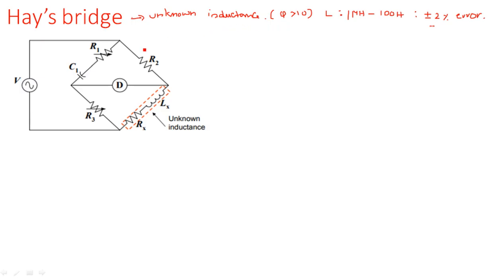It is always good to compare with previous known bridges to understand the difference. In the first arm, Hay's Bridge has a series connection of capacitance and resistance, but the second, third, and fourth arms are common with Maxwell's Bridge. In Maxwell's Bridge we have a parallel connection of R1 and C1, but in Hay's Bridge we have a series connection of R1 and C1 — that is the only difference.